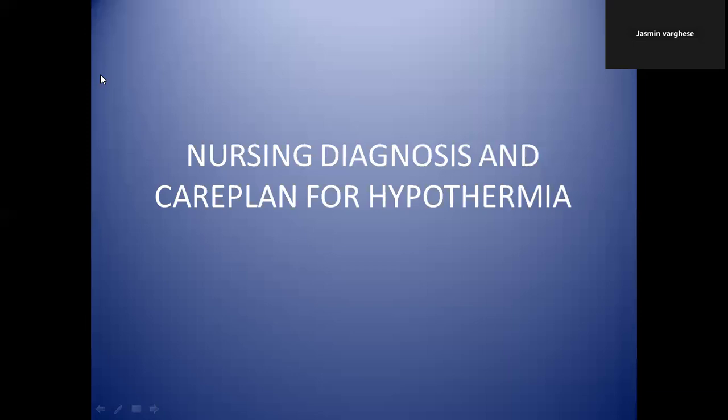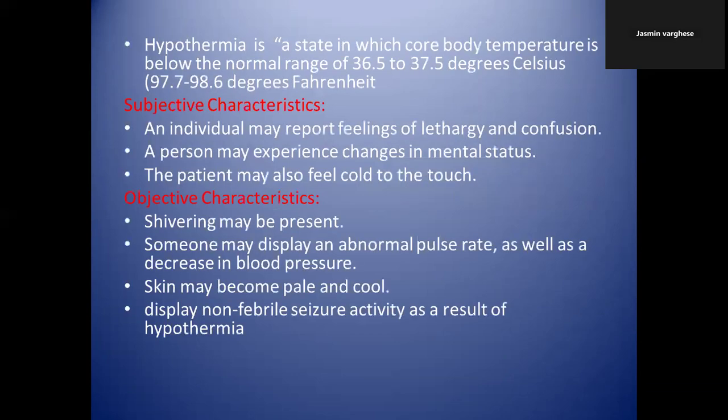Welcome back. Today we are going to discuss another nursing diagnosis and care plan — hypothermia. Hypothermia is a state in which core body temperature is below the normal range of 36.5 to 37 degrees Celsius, or 97.7 to 98.6 degrees Fahrenheit. The normal temperature is between 36.5 to 37 degrees Celsius, and if your body temperature goes below this range, that is called hypothermia.